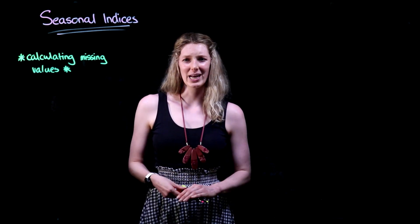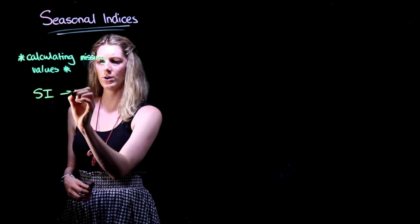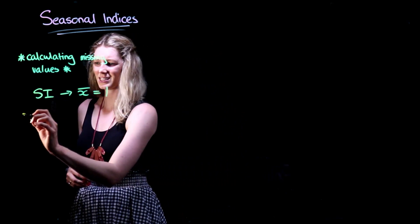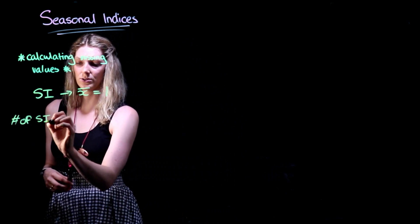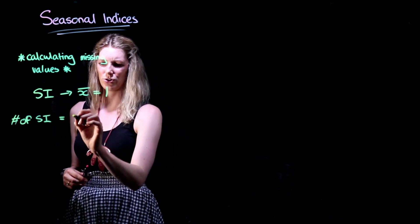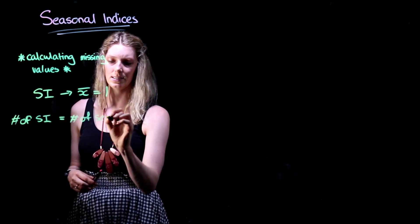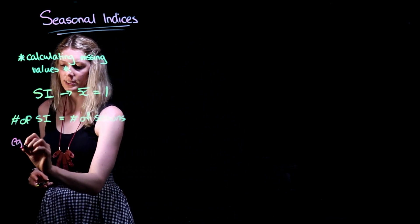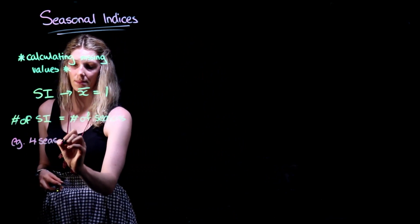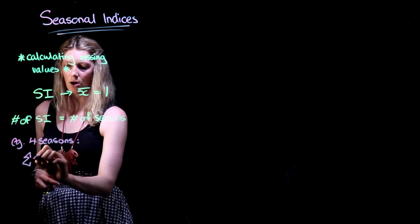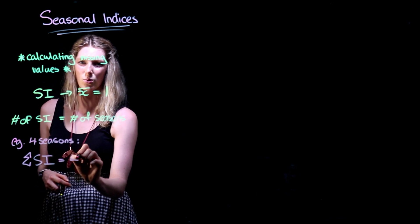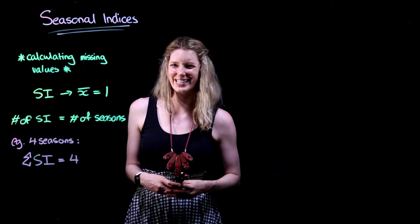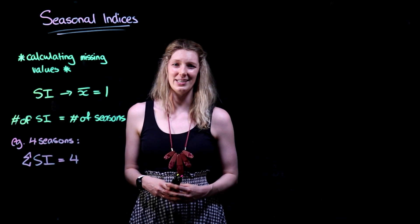When we are looking at seasonal indices, we know that they have a mean value of 1. This means that the number of seasonal indices is equal to the number of seasons. So if we have four seasons, the sum of our seasonal indices will be equal to 4. Likewise, if we have 12 months or 12 seasons, the sum of those seasonal indices will be 12.